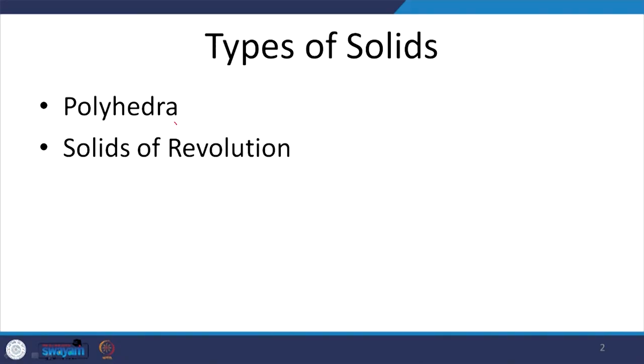For each type of solid, the way in which we draw orthographic projections might vary slightly. The first thing we are going to do today is to understand about the different types of solids. Broadly, the regular solids are divided into two broad categories: the first one is polyhedra and the other one is solids of revolution.